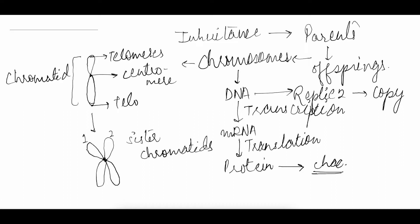What happens here is that whatever allele is present on one chromatid will duplicate and be present on the sister chromatid as well. For example, if allele A is present on one chromatid, then after replication, allele A will also be present on the other chromatid.